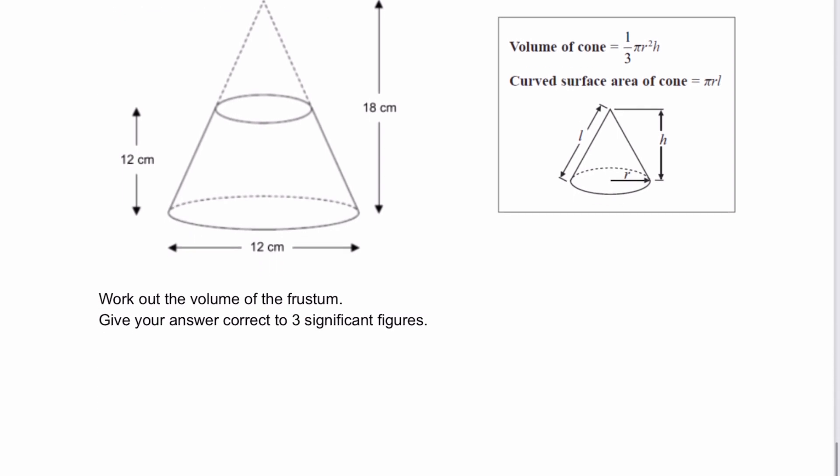Because we've been given the volume of the cone formula, we can use this to work out the volume of the large cone. This is the overall value, which is equal to one-third π r² h. When I add in the information I've got, I've got one-third multiplied by π.